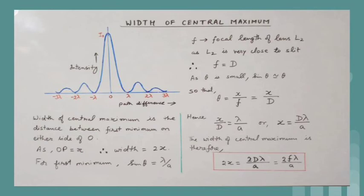Let us now consider the width of the fringe. The width of the central maximum is the distance between the first minimum on either side of O. If OP is equal to x, then the width of the central maximum is 2x. For the first minimum, A sin theta is equal to lambda, or sin theta is equal to lambda by A.